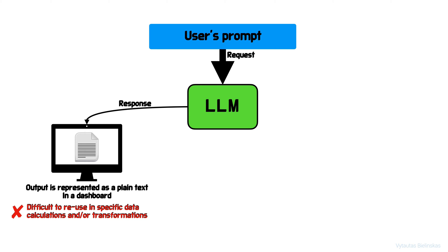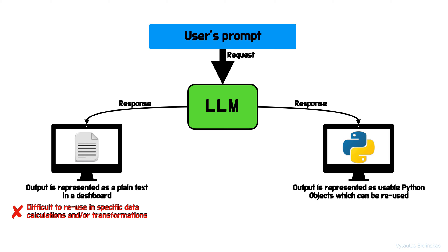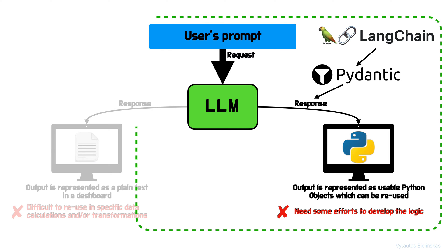So we have another choice — we can send a response to something different. In this way, we can use Python to work further with a given output, because the output is represented as a usable Python object which can be reused. However, you need to put a little effort to develop this logic. And here Pydantic is going to help us. Pydantic is supported by LLM chain. So with this tutorial, we will cover specifically this scenario, which is on the right.